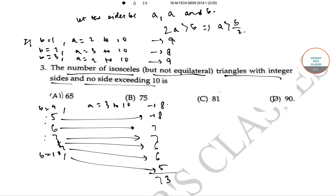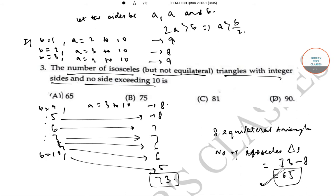So, the total triangles come out to be 73. But among these 73, we have calculated 8 equilateral triangles. Thus, number of isosceles triangles are 73 minus 8 and that is 65. So, the correct option is option A.